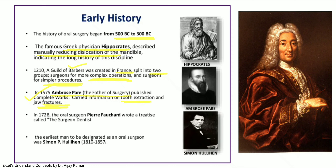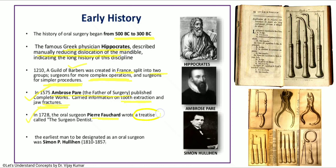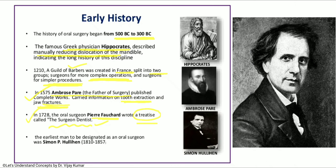Then in 1728, Pierre Fauchard, also known as the father of modern dentistry, wrote a treatise — a long book — which was named 'The Surgeon Dentist.' Then we have Simon Hullihen, who was the first oral and maxillofacial surgeon in the US, based in Pennsylvania.